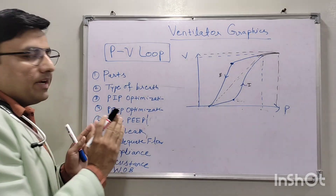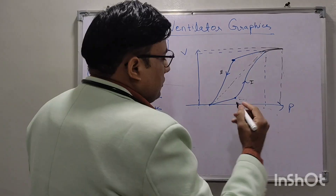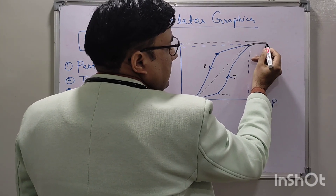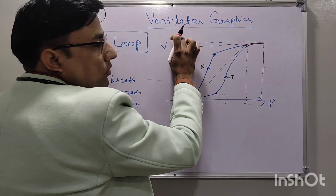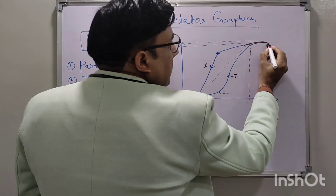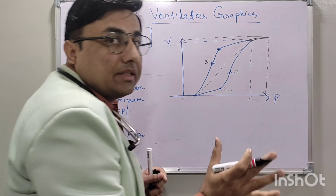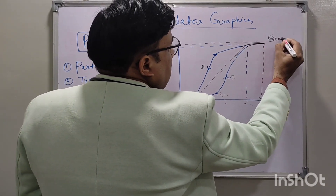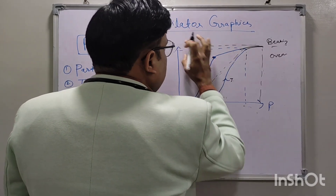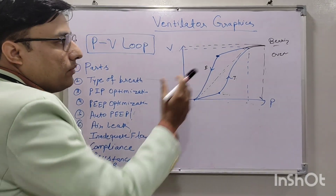We can also optimize the PIP and prevent over-distension using this graphic. We can see that with increasing pressure, volume increases; after the lower inflection point, volume increases rapidly. But after a certain point, volume is not increasing much despite increased pressure — this means over-distension is happening. This excessive PIP is not helping to increase tidal volume or FRC. This is called the beaking appearance, which is a sign of over-distension. We need to decrease the PIP.